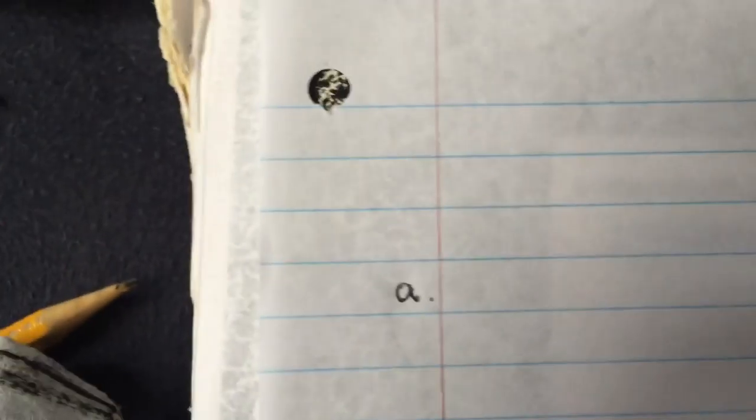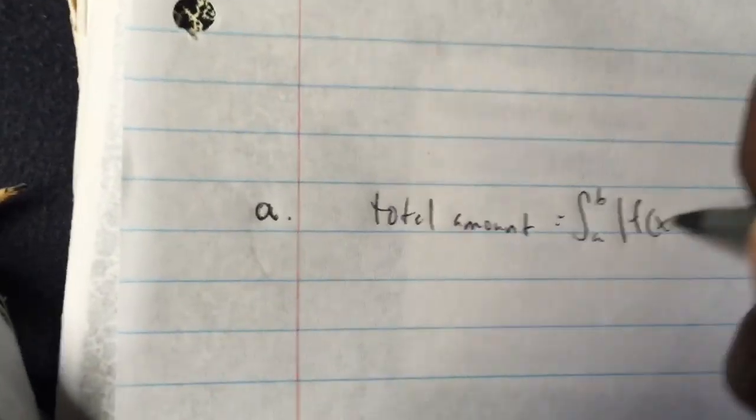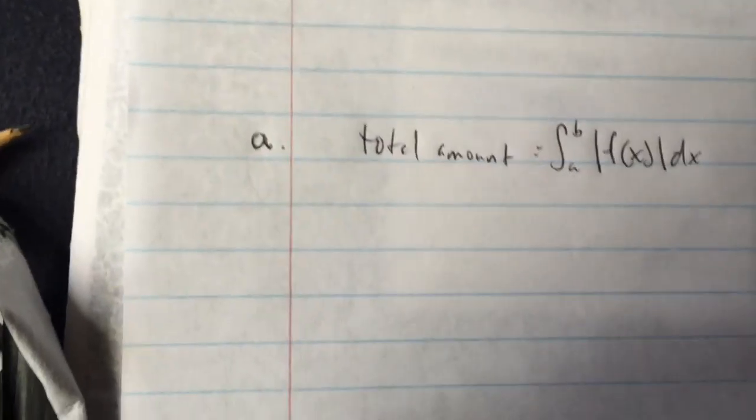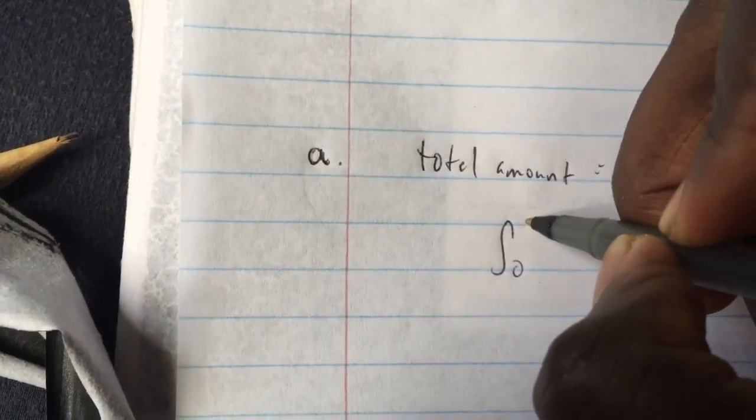The first part of the question is A: to the nearest whole number, how many cars pass through an intersection over the 30-minute period? This is a total amount question. To find the total amount, the formula is the integral from A to B of the absolute value of f(x) dx.